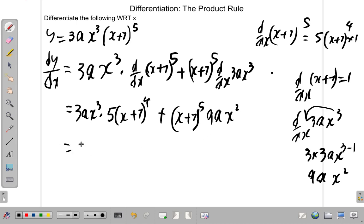We can do some simplification now. Numbers multiplied, 3 by 5 is 15. 15ax³ times (x+7) up to the 4th. Plus now, and then we can put the 9a in front. 9ax². So it's 9ax², and then (x+7) raised to the power of 5. That's your answer.